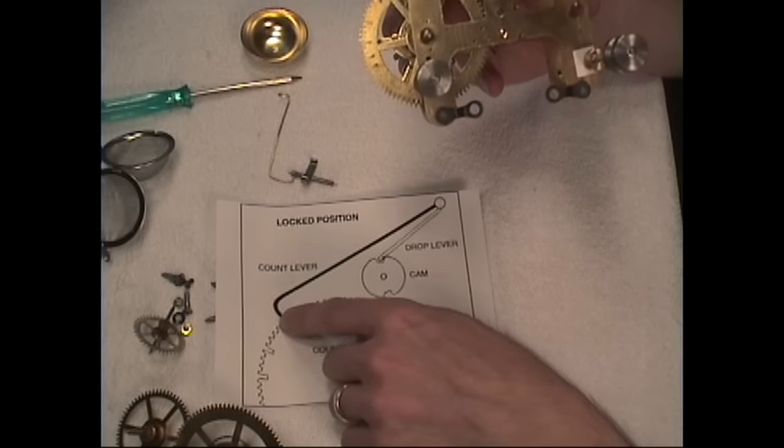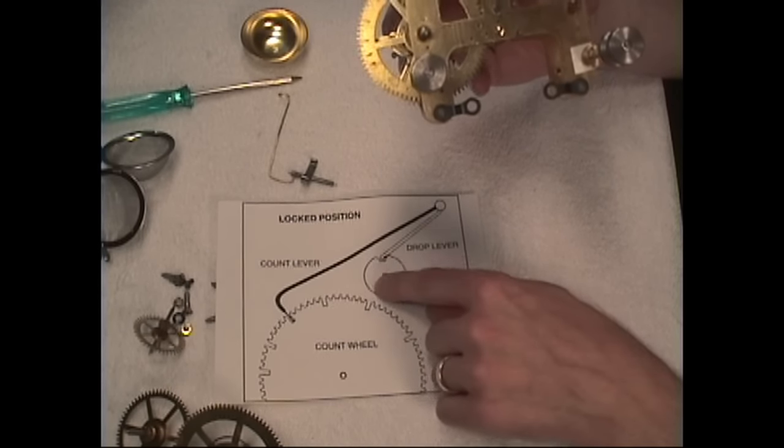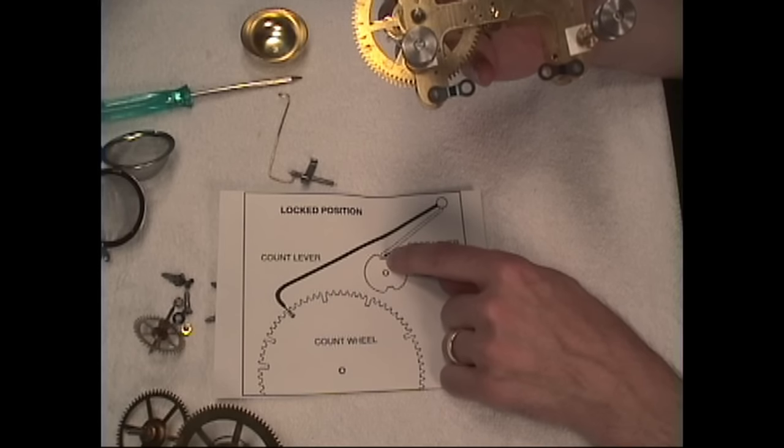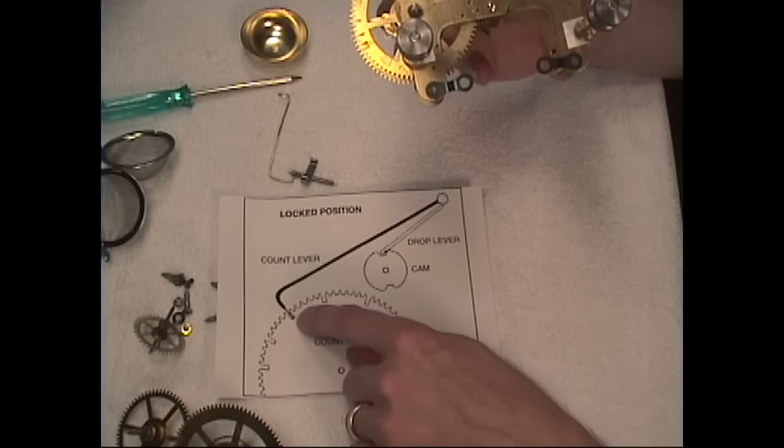Here's the count wheel. Here's our count lever. And there's also a locking cam inside with a lever. And that lever has to drop down into that groove along with the count lever dropping down.